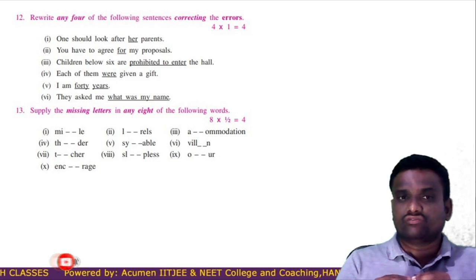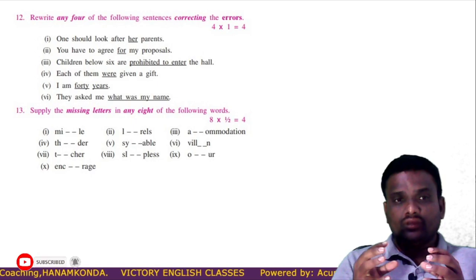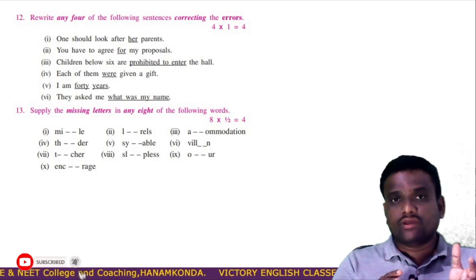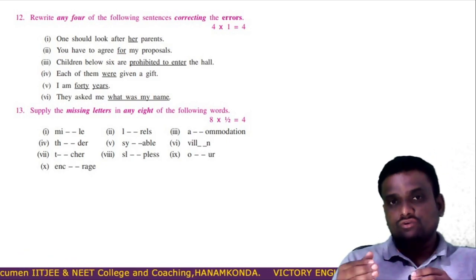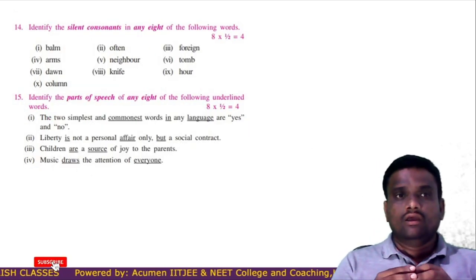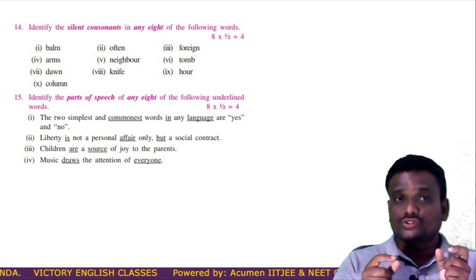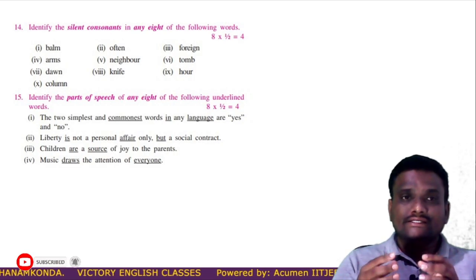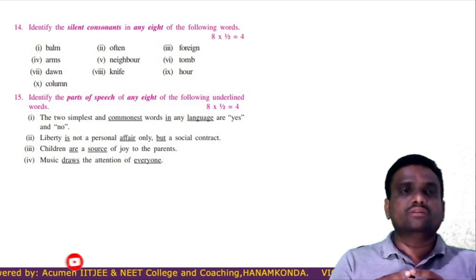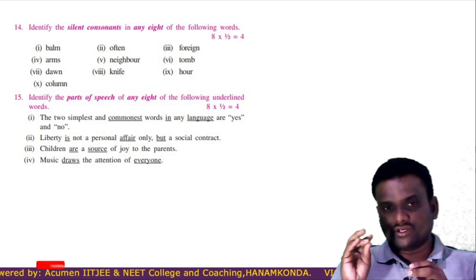The 13th bit: supply the missing letters in any 8 of the following 10 words; if you fill 8 correctly, you will be awarded 4 marks — each question carries half a mark. These 10 words are completely from your textbook, so whenever you read your textbook, observe the spellings of words carefully. The 14th bit: identify the silent consonants in any 8 of the following words. For example, in the word 'bomb', the silent consonant is 'b'. Through this bit, you will easily score 4 marks by practicing. The 15th bit: identify the parts of speech of any 8 of the following underlined words. If you learn parts of speech perfectly, these all become on your fingertips and you will easily get 4 marks.